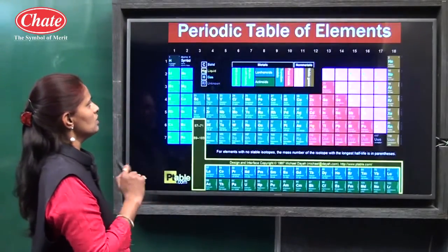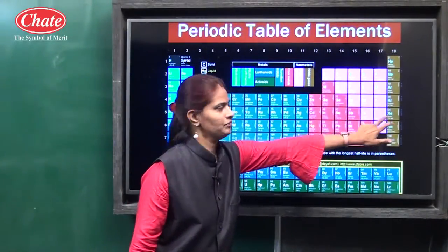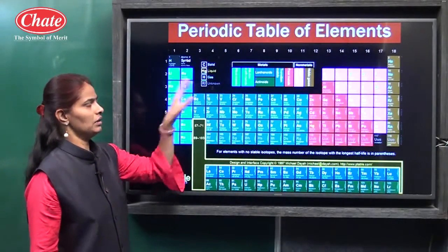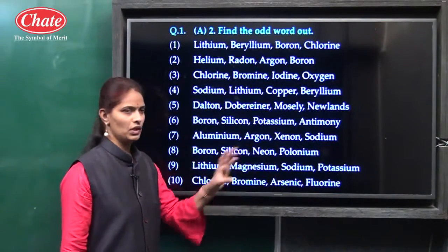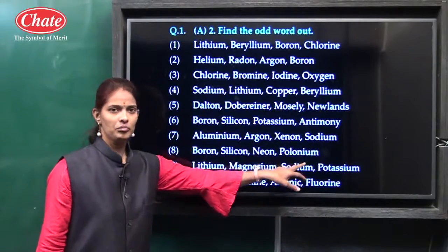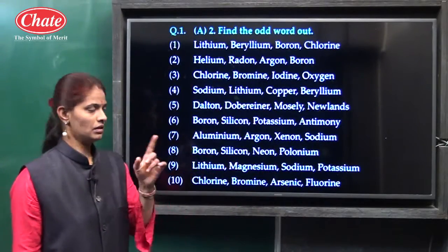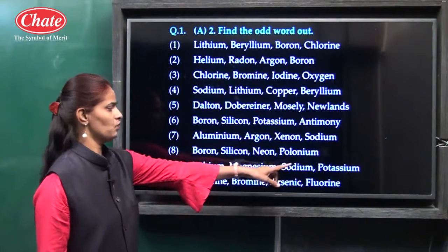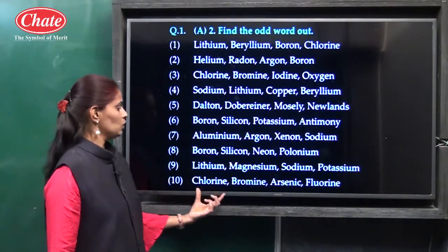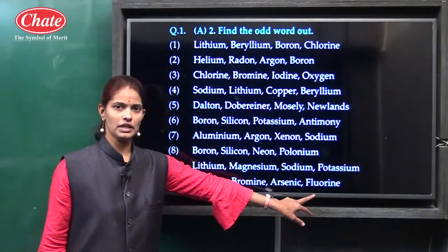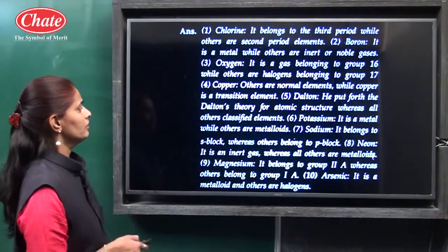Sixth question: boron, silicon, potassium, antimony — here boron, silicon, and antimony are metalloids while potassium is a metal, so potassium is the answer. Seventh question: aluminium, argon, xenon, sodium — aluminium, argon, and sodium are third period elements while xenon is not, so xenon is the correct answer.